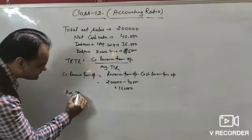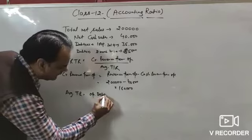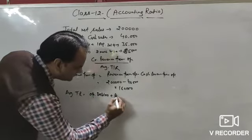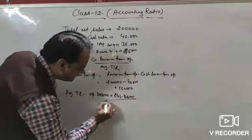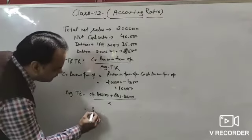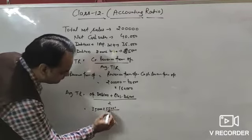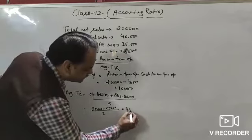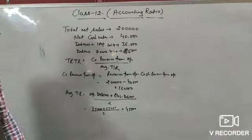Now for average trade receivable: opening debtors plus closing debtors divided by 2 = ₹35,000 plus ₹55,000 = ₹90,000 divided by 2 = ₹45,000. This is the average trade receivable.